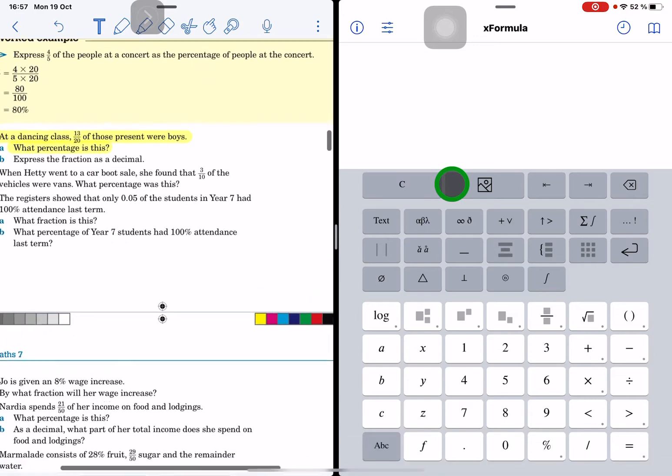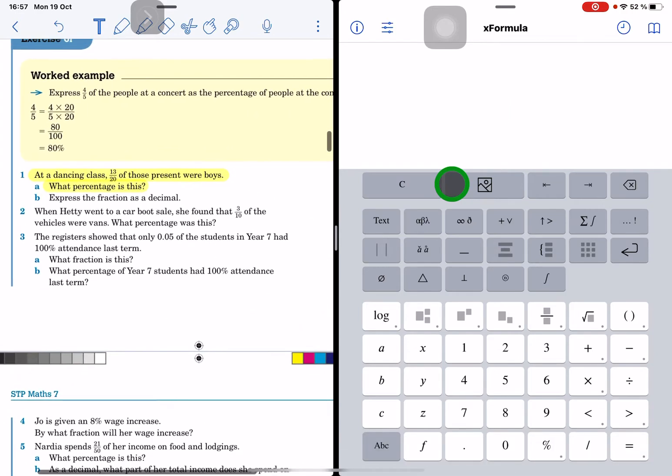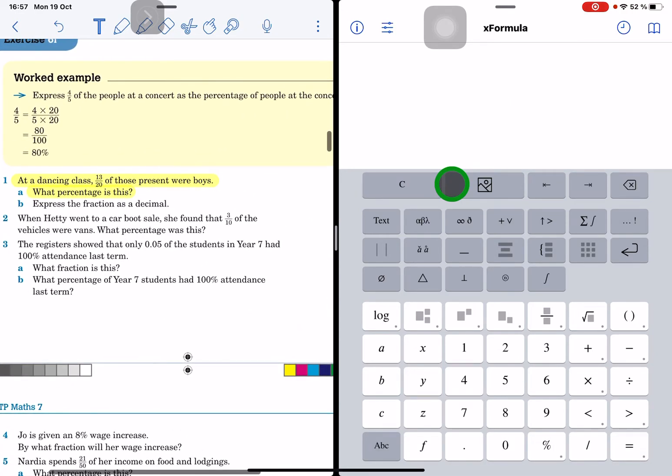In Notability I'm going to make my screen a little bit bigger so I can see what I'm doing. Here on that side in X Formula you can notice that we have from the simplest to the most complex math symbols. We can toggle between letters and numbers and functions and all sorts of other things.